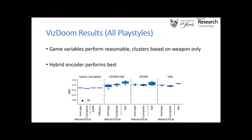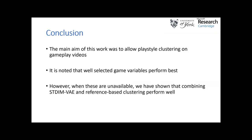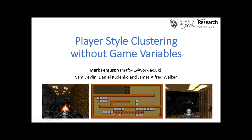Since both encoding methods encode different types of playstyle well, a hybrid method can create an encoder understanding a greater range of playstyles. Combining all playstyles based on gun choice and player movement, the encoding systems always performed best, with the hybrid encoder combined with reference-based clustering performing best overall. In conclusion, the main idea was to cluster playstyles purely based on gameplay videos. When suitable variables can be selected, clustering on them performs best, but the methods here are specifically for cases when this is unavailable or playstyle types are not known.